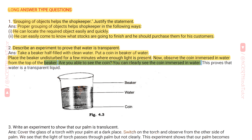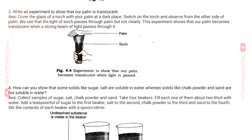This proves that water is a transparent liquid. As you can see in figure 4.3, this is a beaker, this is water, and this is a coin. Question 3: Write an experiment to show that our palm is translucent.